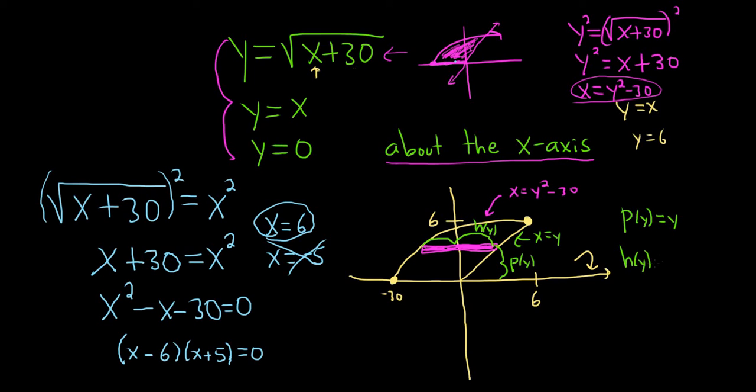So this one here is x equals y. So h of y, it's right minus left. So it's y minus parentheses y squared minus 30. Right minus left. It's x equals y minus x equals y squared minus 30. Right minus left. If that's confusing, think simple. Pretend it was 4 and 1, and you had a rectangle here. Think of this as x equals 4 and x equals 1. x equals 4 minus x equals 1 is x equals 3, which is the height or length of the rectangle. Same thing here. It's x equals y minus x equals this one, which is y squared minus 30. We can distribute the negative here. So h of y is y minus y squared and then plus 30.